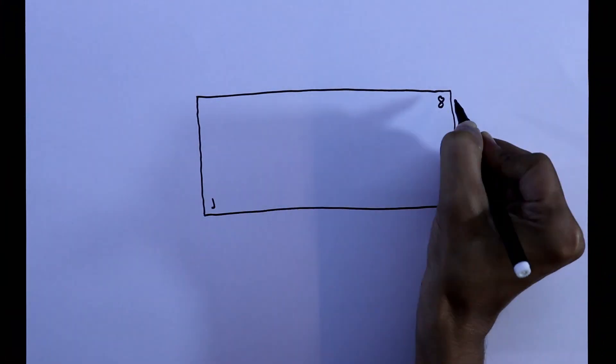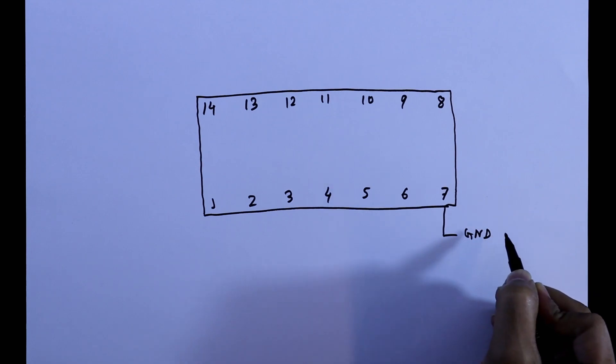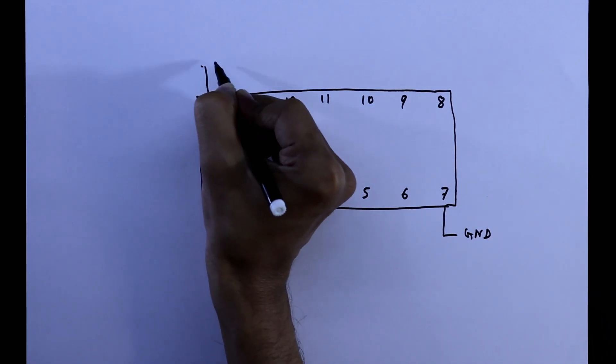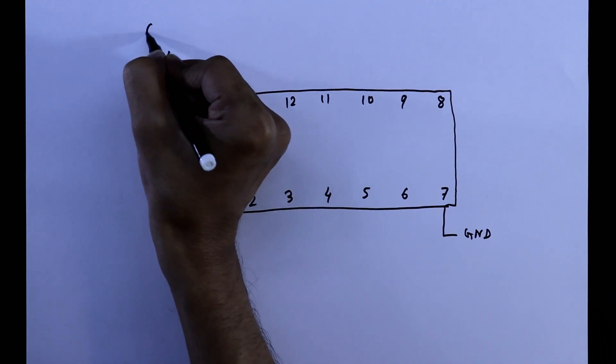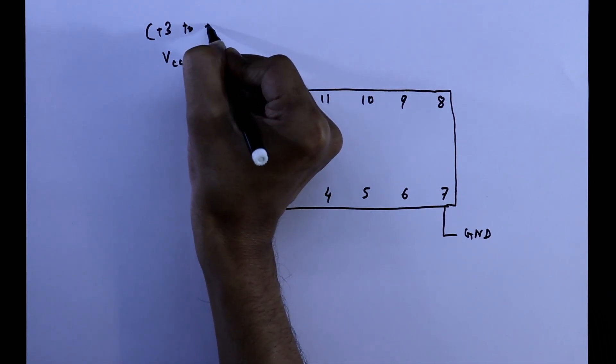First we will see the pin diagram of the IC. Pin 7 is ground pin and pin 14 is VCC. We can use from plus 3 volt to plus 16 volt.